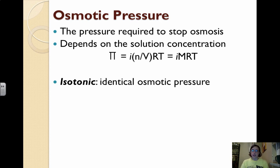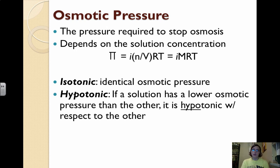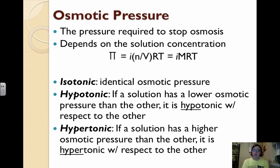There are different types of solutions when considering osmosis. An isotonic solution means the solutions on both sides of the membrane have identical osmotic pressure, so no osmosis will occur. A hypotonic solution has a lower osmotic pressure than the other — solvent will leave this solution and go to the other. A hypertonic solution has a higher osmotic pressure — solvent will enter this solution to try to balance it out.